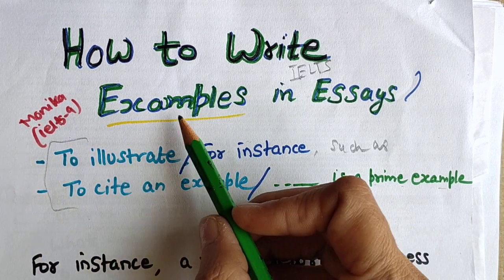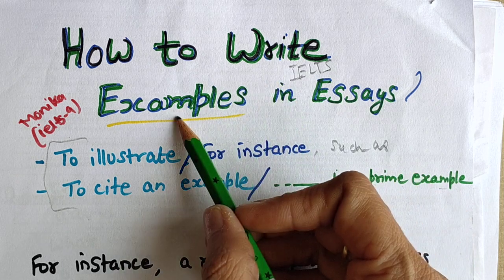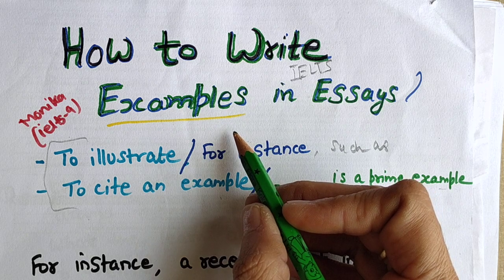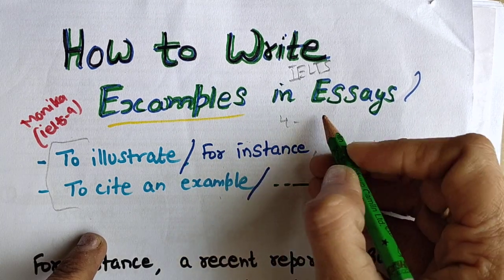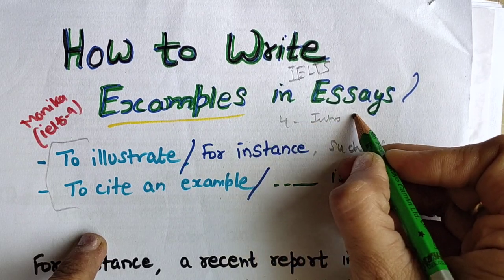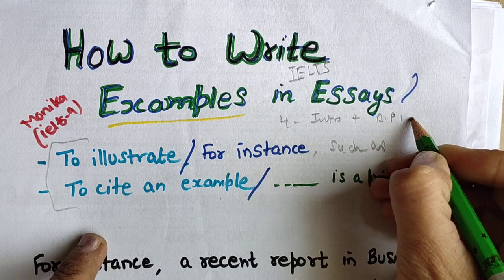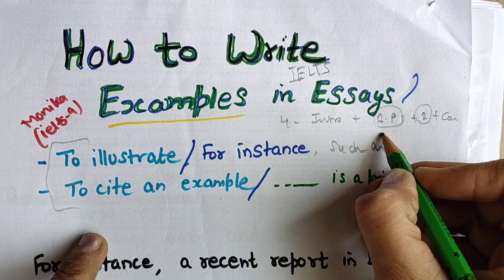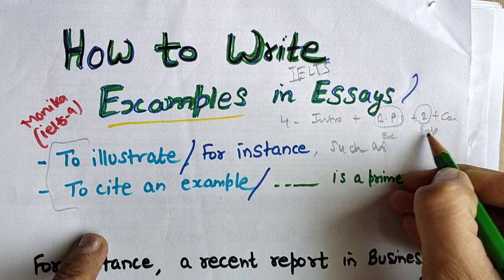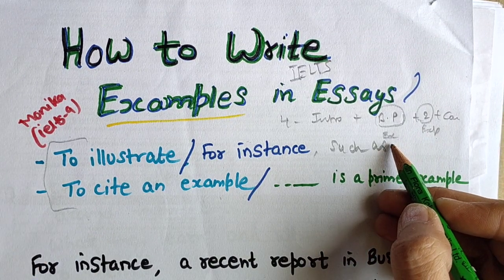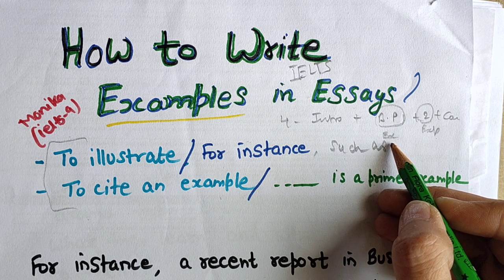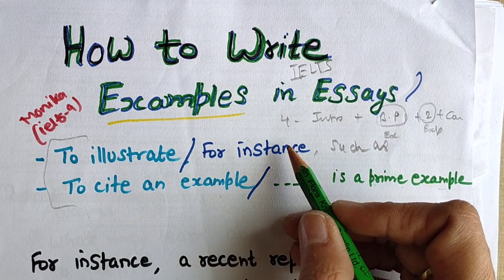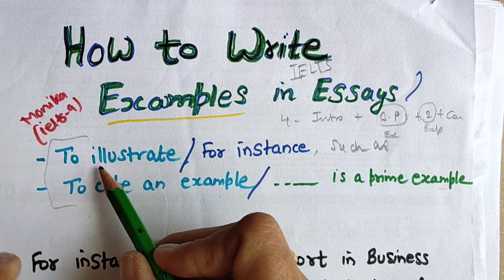Hi everyone, I am Monica from IELTS 9. I am going to discuss how to write or add examples in an essay. Examples go within body paragraphs. There are four paragraphs: introduction, body paragraph one, body paragraph two, and conclusion. In body one and body two, you need to add one example each. Some students add examples at every point — there is no need to add two examples in one paragraph; one example per body paragraph is enough.